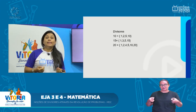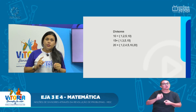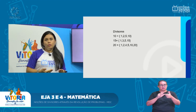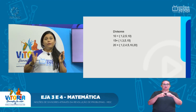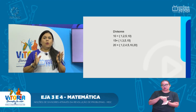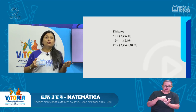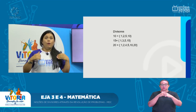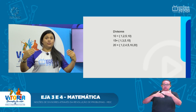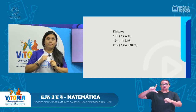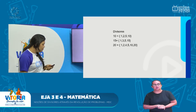Essa é a lista de divisores. Diferente dos múltiplos, os divisores têm um limite — eles têm fim. Os múltiplos não: quanto mais eu contar, mais vai ter. Vamos voltar aqui.